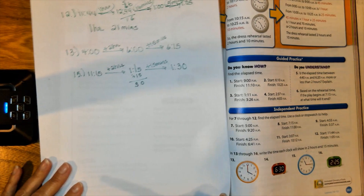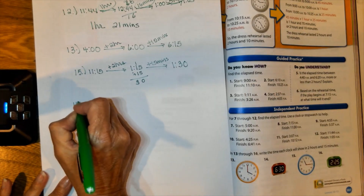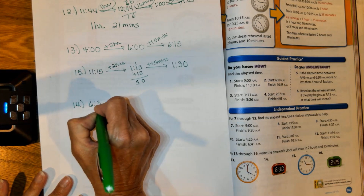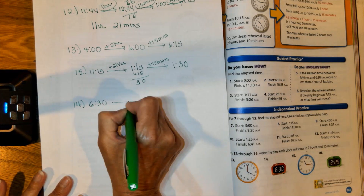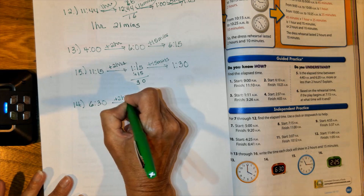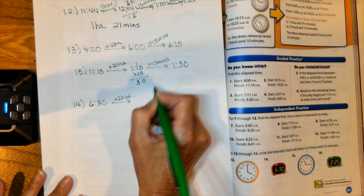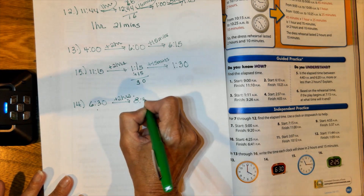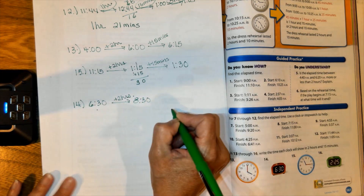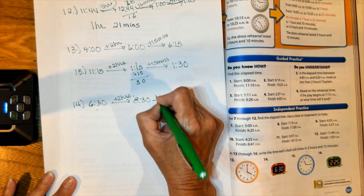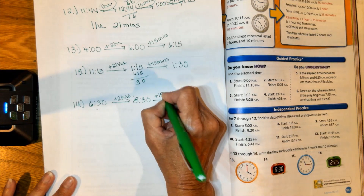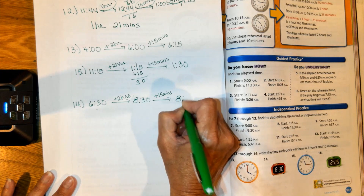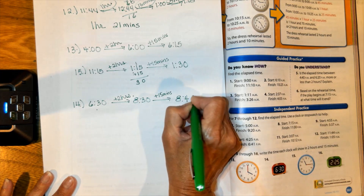Let's look at number 14. You have a start time of 6:30. Add the 2 hours — 6:30 plus 2 hours is 8:30. Then add 15 minutes to that — 8:30 plus 15 minutes is 8:45.